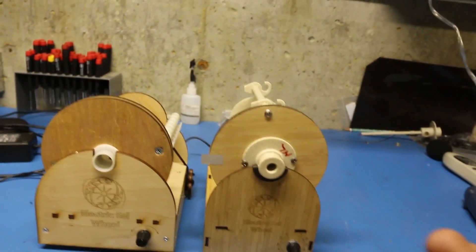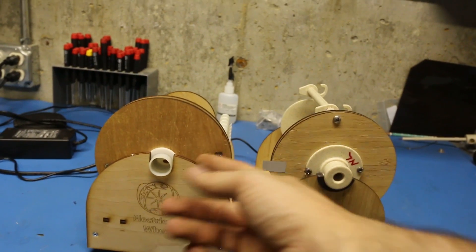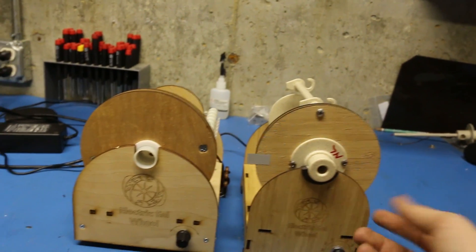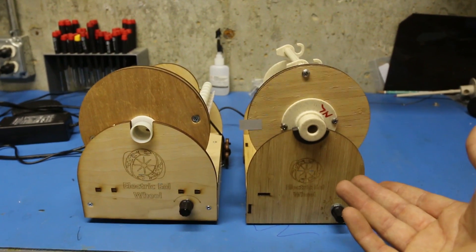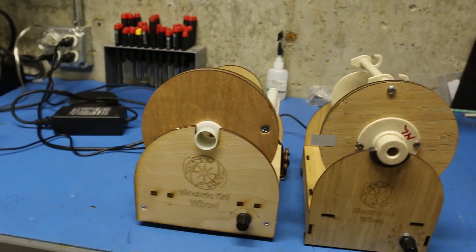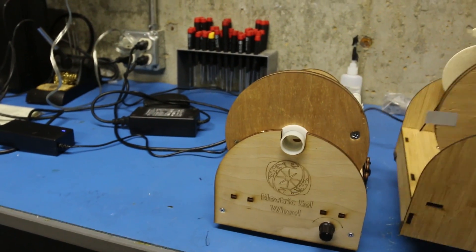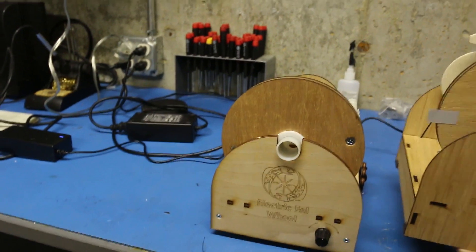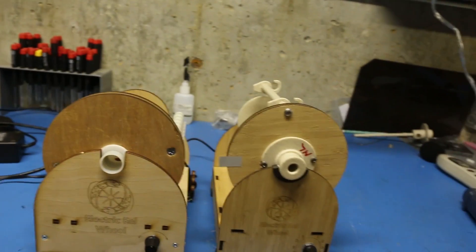So I wanted to compare and contrast a little bit with the Electric Eel Wheel version 4 to this new one, the version 5. One of the first things you'll notice is that the fifth version is even smaller, and that's really useful because one of the big advantages of an electric spinning wheel is how portable it is. I mean, it really just fits in the palm of your hand. You can take it to your knitting nights.